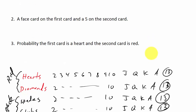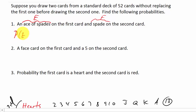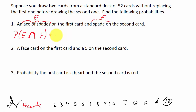Let's look at these probabilities. The first one: the probability of drawing an ace of spades on the first card and a spade on the second card. I'm going to call drawing an ace of spades event E, and drawing a spade event F. When we're doing the probability of one event and another event, we multiply the two probabilities together.